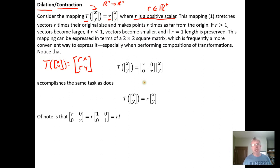And what we want to notice is that we could accomplish this same task of multiplying R times a vector using a matrix transformation. So here I have a matrix that has R, 0, 0, R.